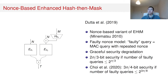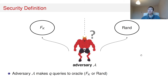We see that both EWCDM and this nonce-based EHTM construction use two block cipher calls and one universal hash function evaluation. We wonder whether we can build a construction with the same cost but achieve similar or better security. Before we give an answer to this question, we first want to define the security definition used in this work.